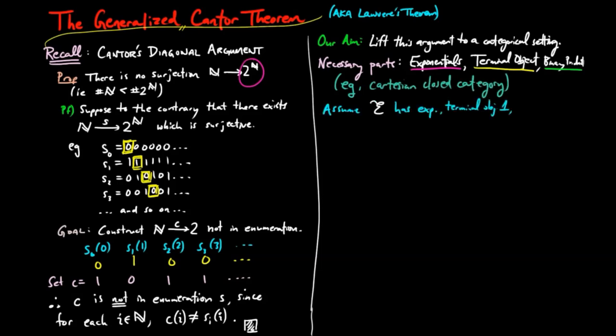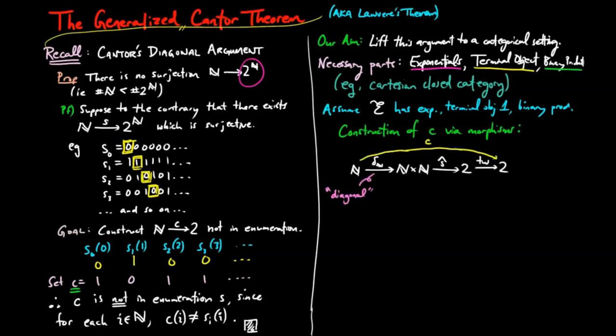Now we translate the construction of the sequence c on the left to a categorical setting. c is given by the following composition in the category of sets, where delta sub n is the diagonal morphism, which can be defined by the universal mapping property of the product induced by identity morphisms. s hat is the exponential adjoint, which is given by the following composition.